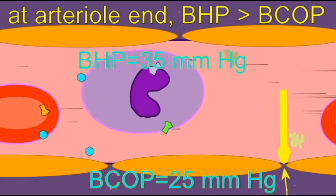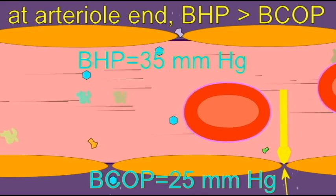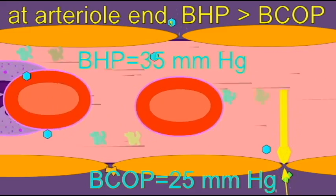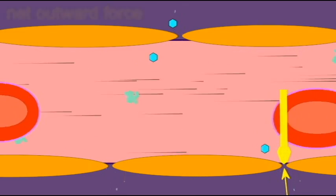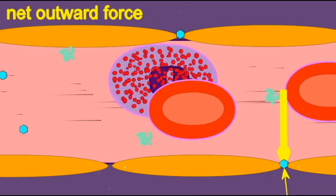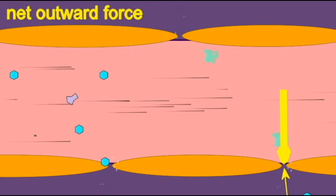Because the outward-pushing force exceeds the inward-pushing force, there is a net pressure which will force fluid and materials out of the capillary. This is the situation at the arterial end of a capillary.